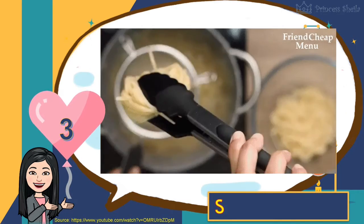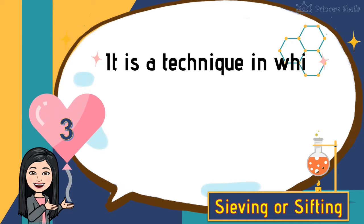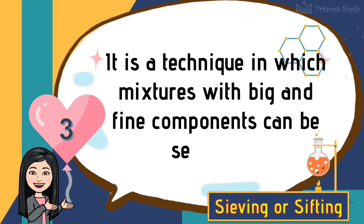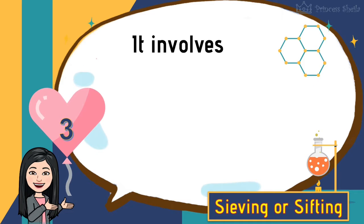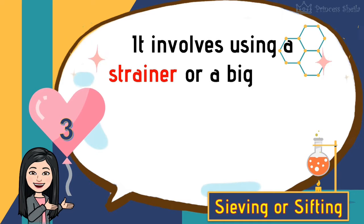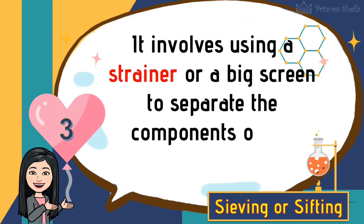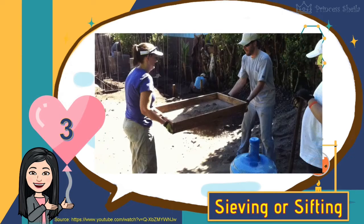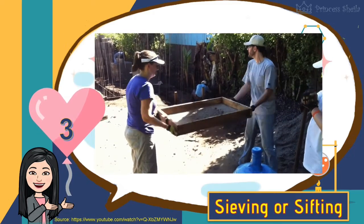Third is sieving or sifting. It is a technique in which mixtures with big and fine components can be separated. It involves using a strainer or a big screen to separate the components of the mixtures. For example, separating the mixture of sand and gravel.